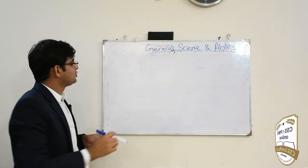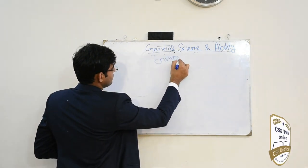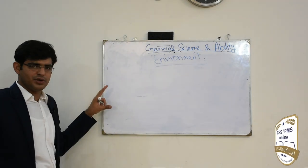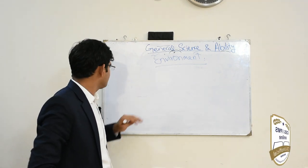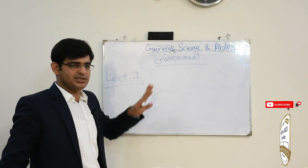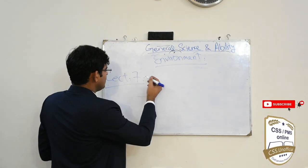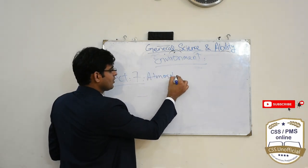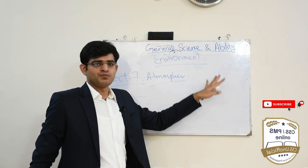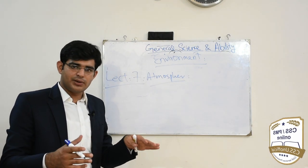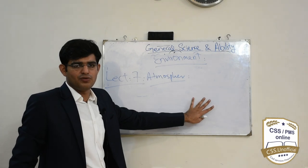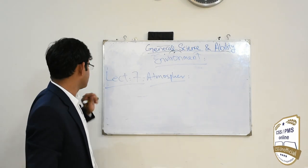اس کے بعد general science کا تیسرا section ہے environment، جو دو lectures میں cover ہوگا۔ Lecture 7 میں environment کے بالکل basics پڑھیں گے — atmosphere، earth crust، اور different environment types جیسے tundra اور rain forests وغیرہ۔